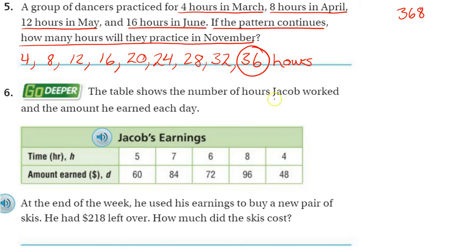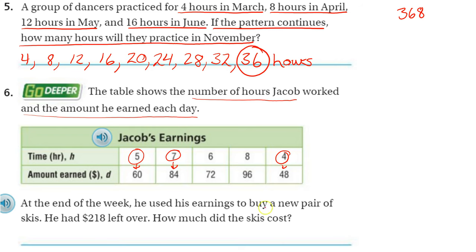Number 6: The table shows the number of hours Jacob worked and the amount he earned each day. If he worked for 5 hours, he earned $60. If he worked for 7 hours, he earned $84. If he worked for 4 hours, he earned $48. At the end of the week, he used his earnings to buy a new pair of skis and had $218 left over. How much did the skis cost?